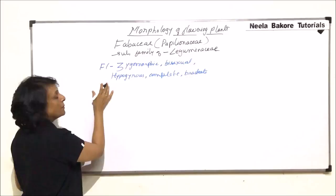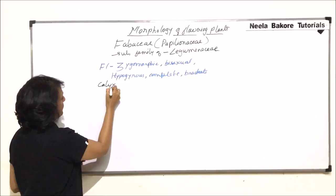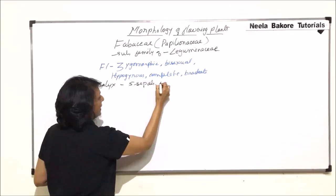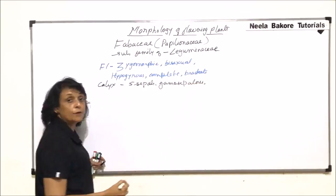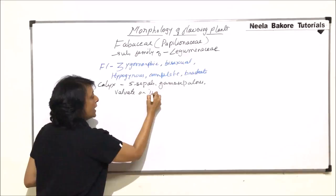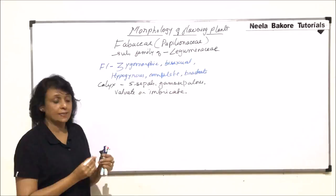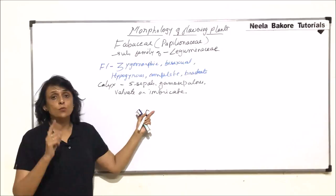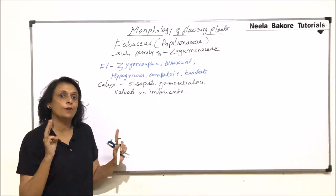Using this we will draw all those structures and write the formula. Now coming from the outermost whorl inwards. The first outermost is calyx. There are five sepals, gamosepalous. That means they are fused. Aestivation is valvate or imbricate. When we use the word valvate that means there is no overlapping.